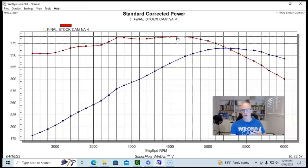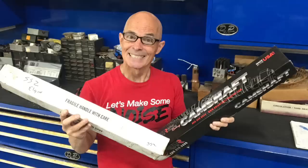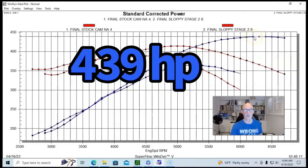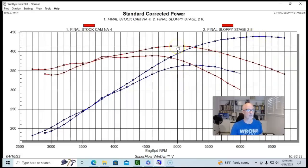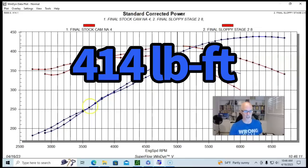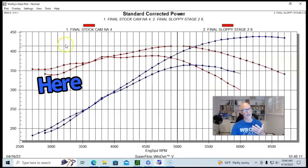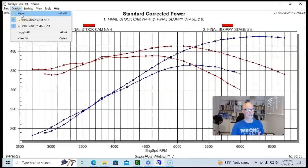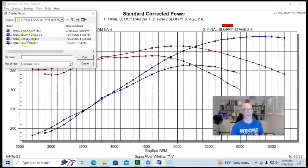So what I wanted to do was compare this combination with some kind of 220-ish cam. The first one that I came across actually was a sloppy stage 2. It's a little bigger than I wanted. It was a 228, but it did pick up good power. 439 horsepower and 414 foot-pounds of torque. You can see it lost power down below 3,500.